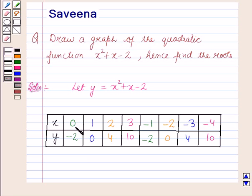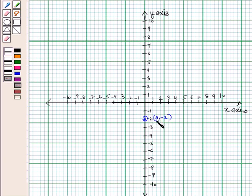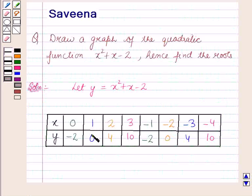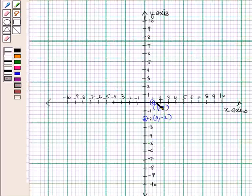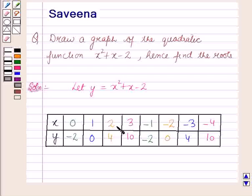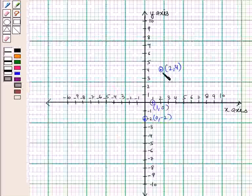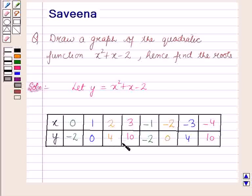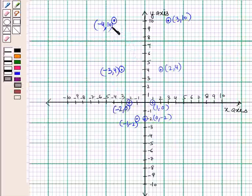The coordinates of the first point are (0, −2). So this is the point (0, −2) on the graph. The coordinates of the next point are (1, 0). So this is the point (1, 0) on the graph. The coordinates of the next point are (2, 4). So this is the point (2, 4) on the graph. Similarly we will plot all these points on the graph. Now we have plotted all the points on the graph.